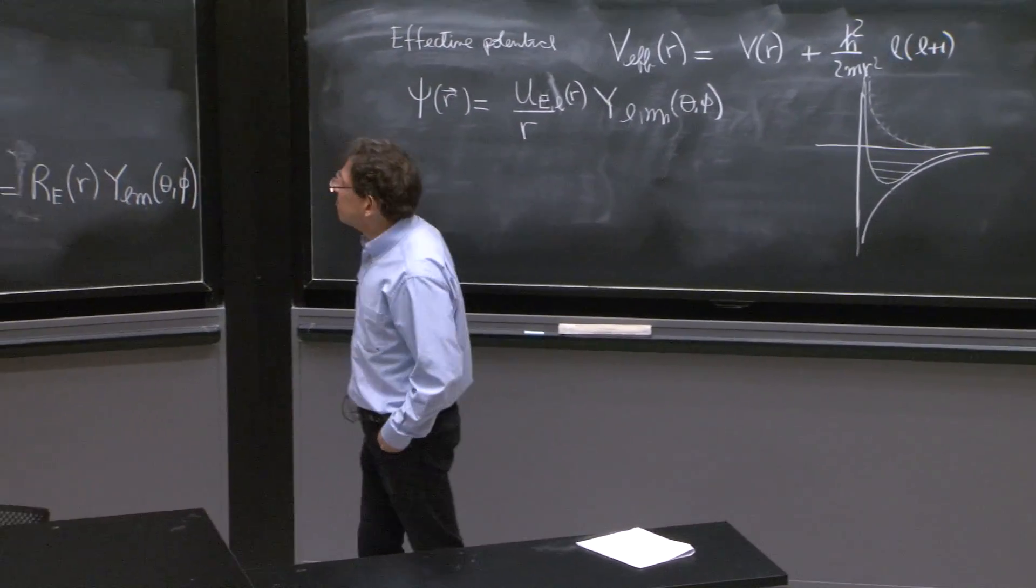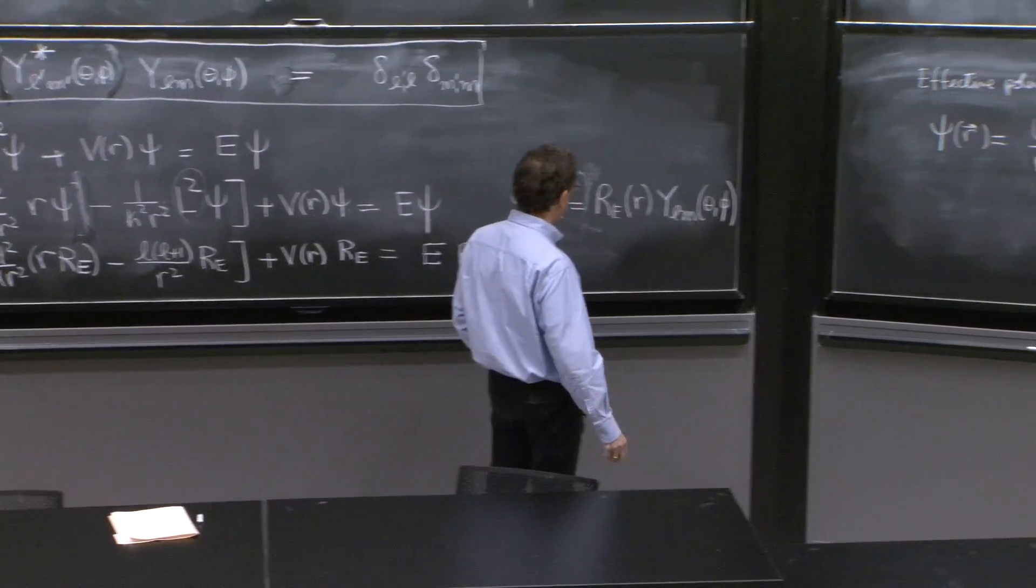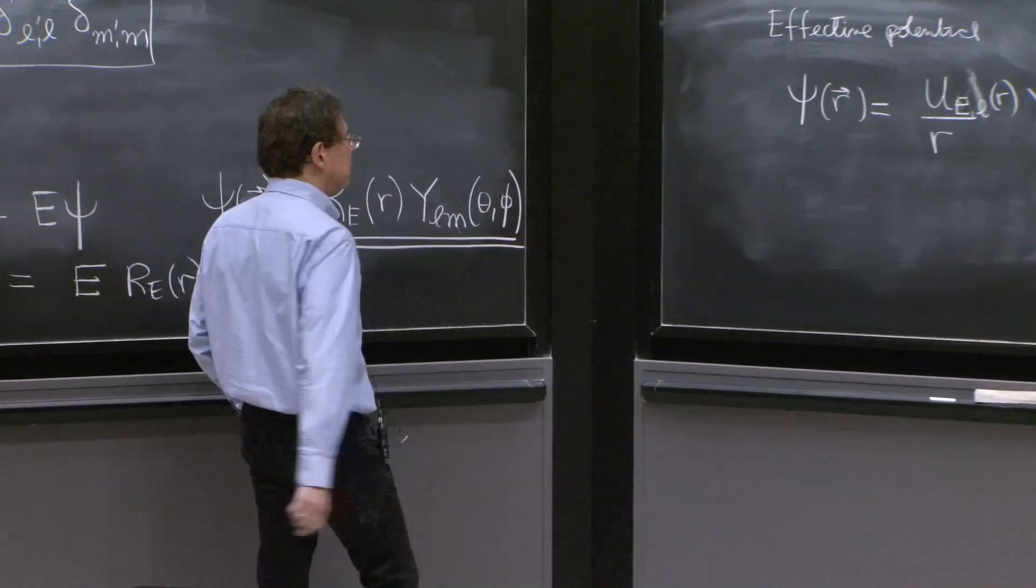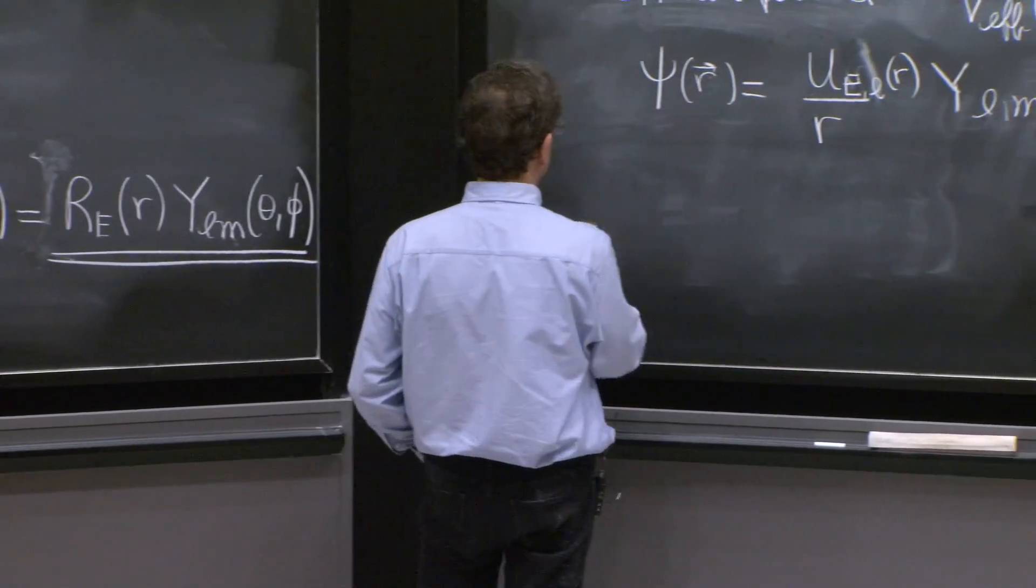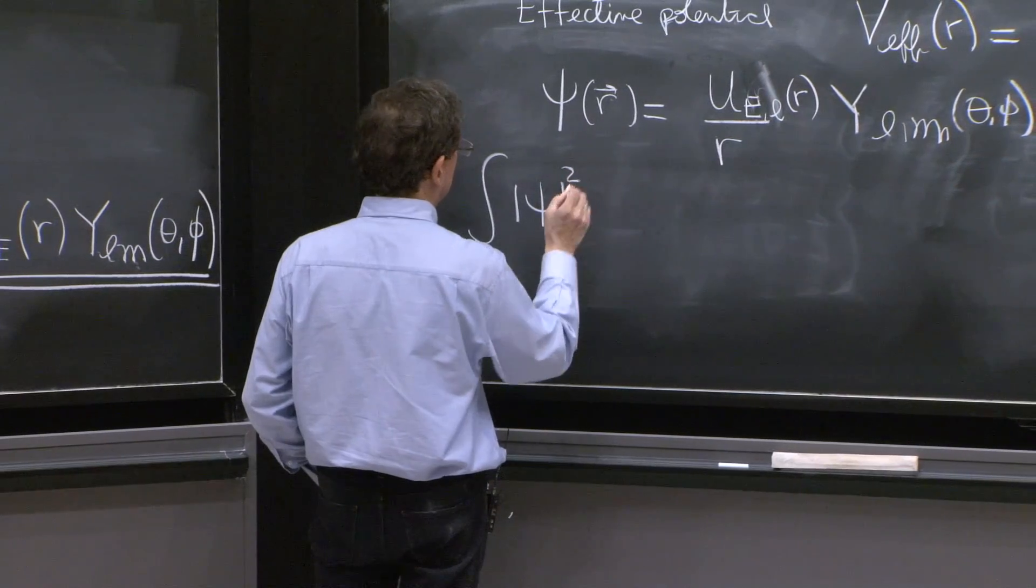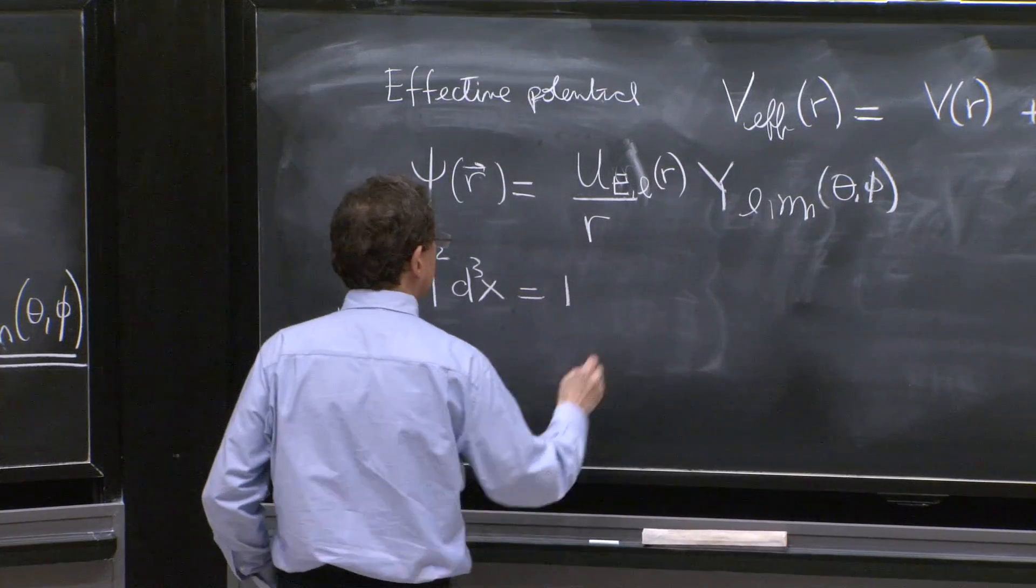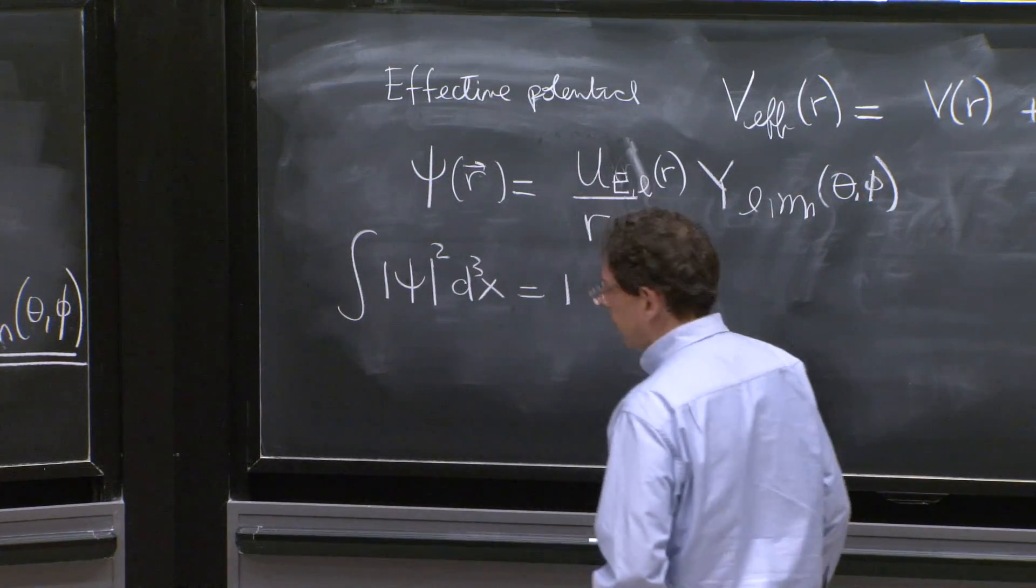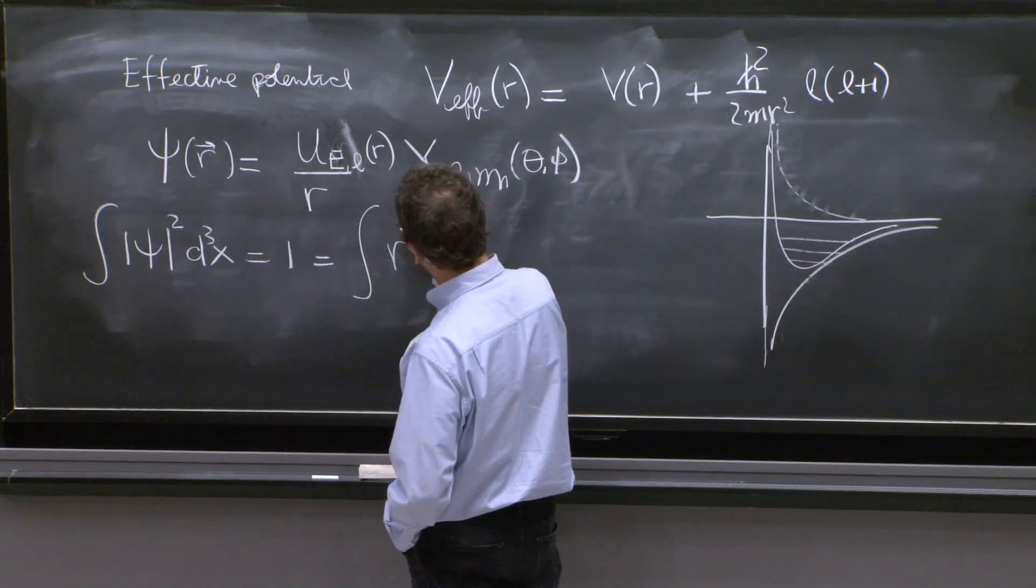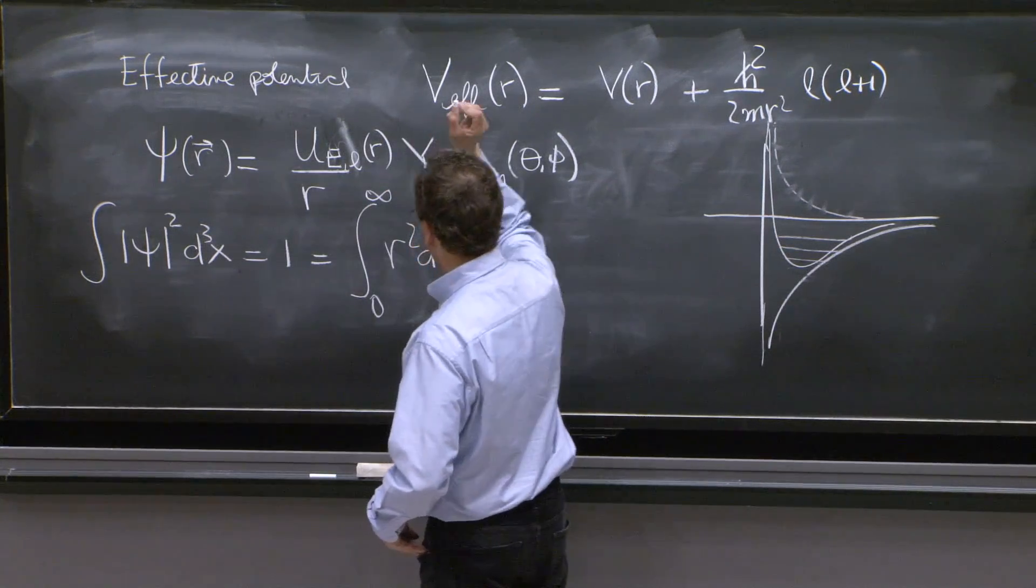Good. Normalization. The last thing that has to work out nicely. Let's try to see what does the normalization say about this function. Well, we should find that the integral of ψ² d³x is equal to 1. But that integral, as you now know, it's the integral of r² dr from 0 to infinity.